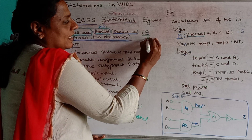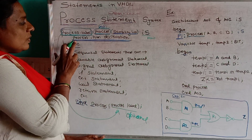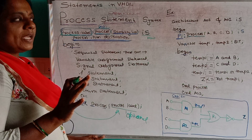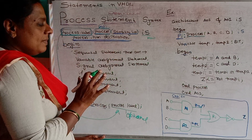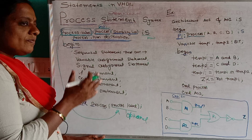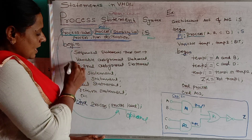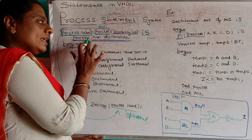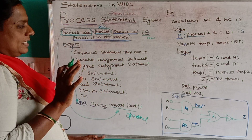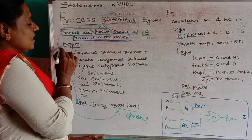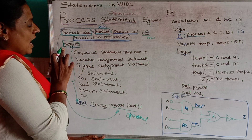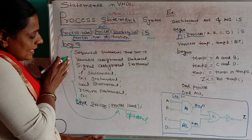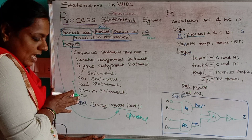'Is' is once again a keyword. After that, you write the process item declaration. The process item declaration is where any variables you want to use inside the process must be declared. Afterwards, you write the 'begin' of the process statement. After 'begin', you write any number of sequential statements.